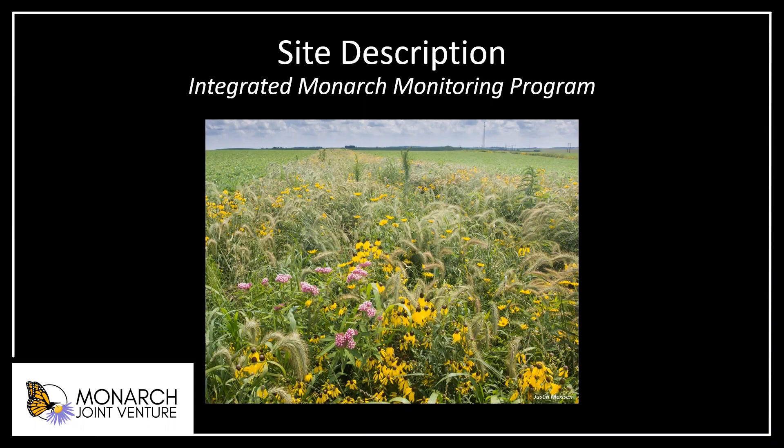In this video, you'll learn how to fill out the site description and conservation management history forms. The site description is the only required form for monitoring. This ensures a minimum amount of information is uniformly collected at all sites. It's a way to describe the site type, your monitoring plot location, disturbances, and other significant features of habitat in the plot. The conservation management history form is required for a site where management occurs and records what management has occurred and when.